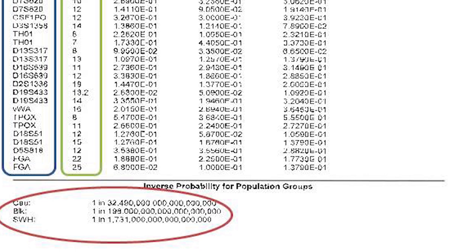Black, 1 in 195 or 198 — a lot. Southwest Hispanic, a lot. We're in the quintillions here, with 18 zeros behind our first number.